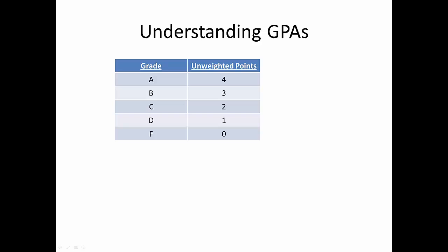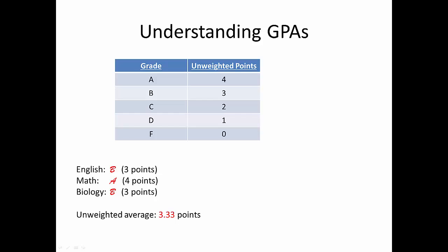Each grade is converted into a number of points, which are then averaged together to produce a GPA. For example, a student with a B in English, an A in Math, and a B in Biology gets 3 points for each B and 4 points for the A. These average together to give a GPA of 3.33, which is about a B plus in most systems. This is an unweighted GPA because the value for any particular grade — for example, 3 points for each B — is the same regardless of the course the grade was earned in.